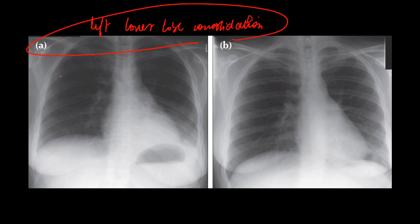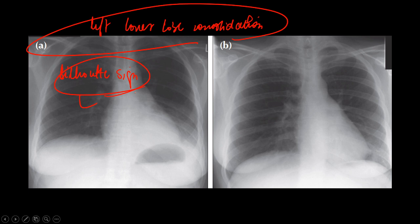This sign is also known as the silhouette sign. Silhouette basically means sharp borders. Whenever there is consolidation — a homogenous opacity with density similar to soft tissue — and it is lying adjacent to any heart border or adjacent to the dome of the diaphragm, it will obscure that border.